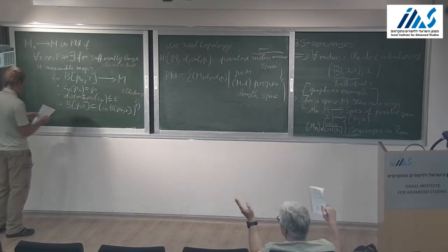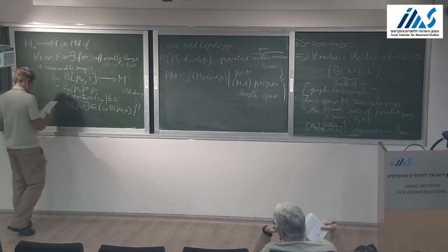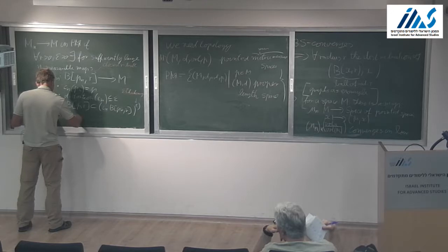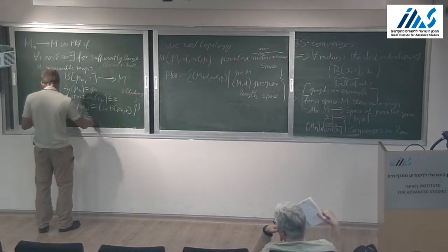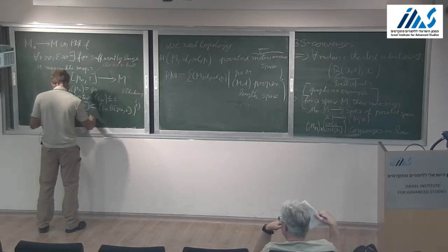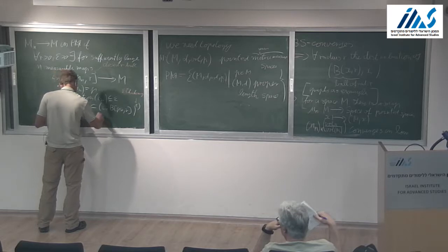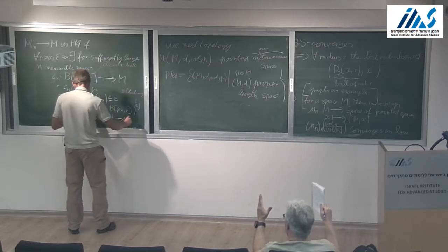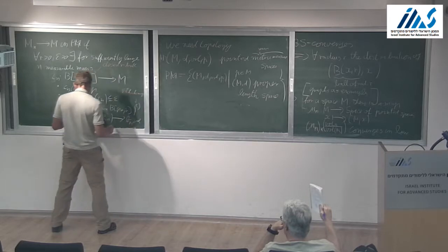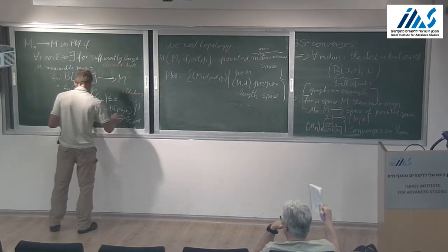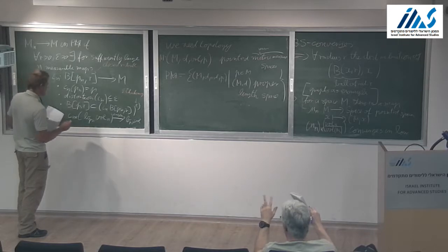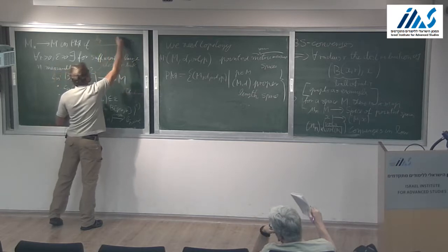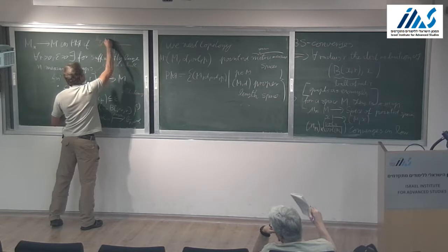And you also require that these maps are almost surjective in the following sense: that the ball of radius R around the root in M is contained in the image of the ball thickened by epsilon. This is the epsilon thickening. Finally, you also have to do something with the measure — you say that the push forward of the measure, cut off by a continuous function, converges to the cutoff of the volume measure. This function dp is the cutoff function.